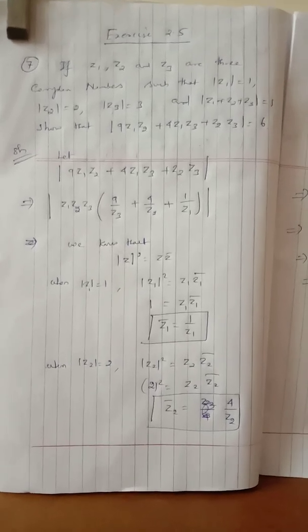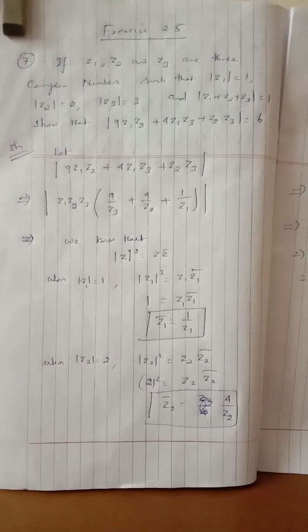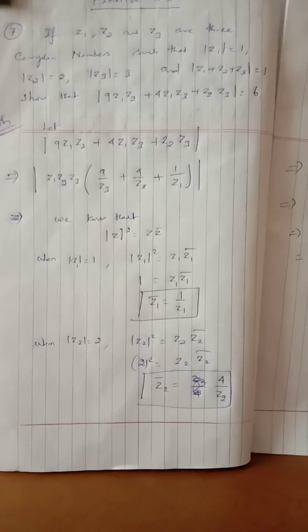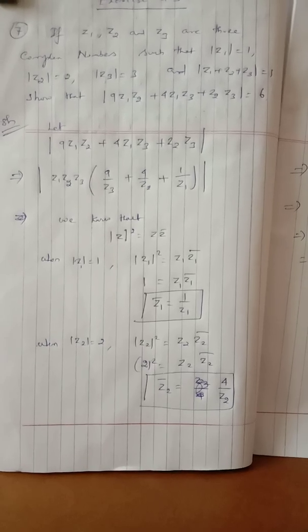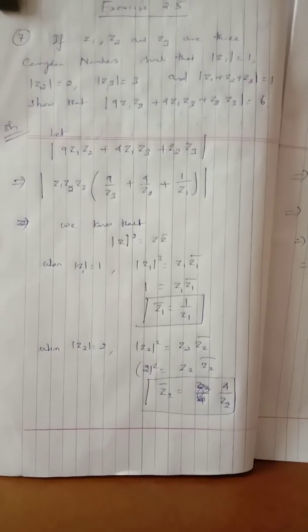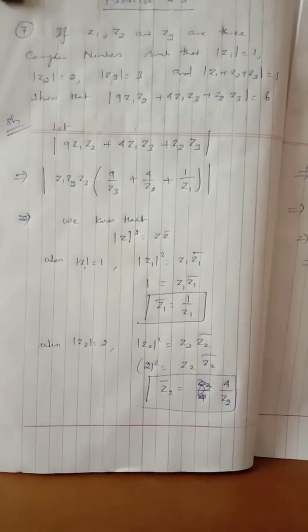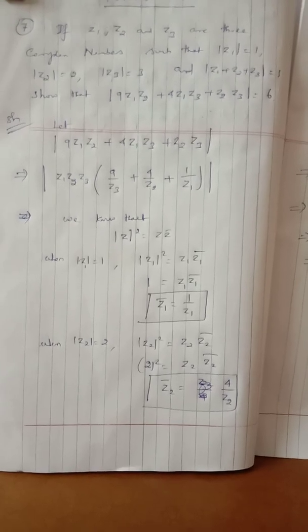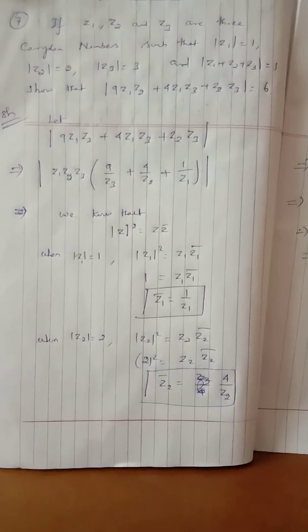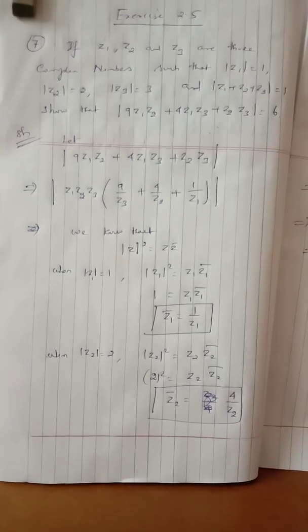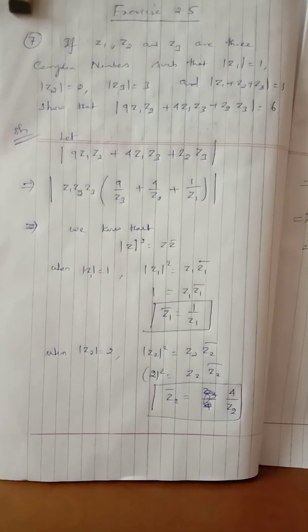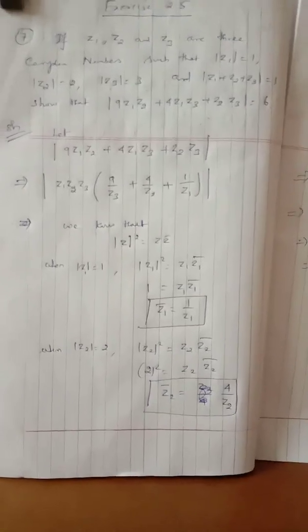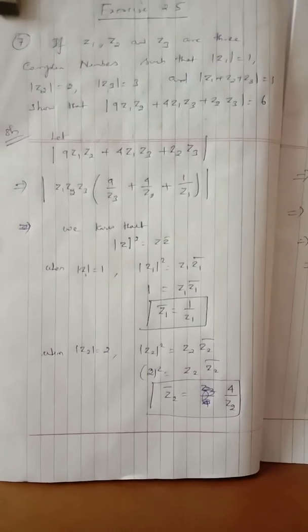Exercise 2.5, Sum number 7. If Z1, Z2 and Z3 are three complex numbers such that modulus of Z1 equals 1, modulus of Z2 equals 2, and modulus of Z3 equals 3, and modulus of Z1 plus Z2 plus Z3 equals 1, show that modulus of 9Z1Z2 plus 4Z1Z3 plus Z2Z3 equals 6. To show that LHS equals RHS.